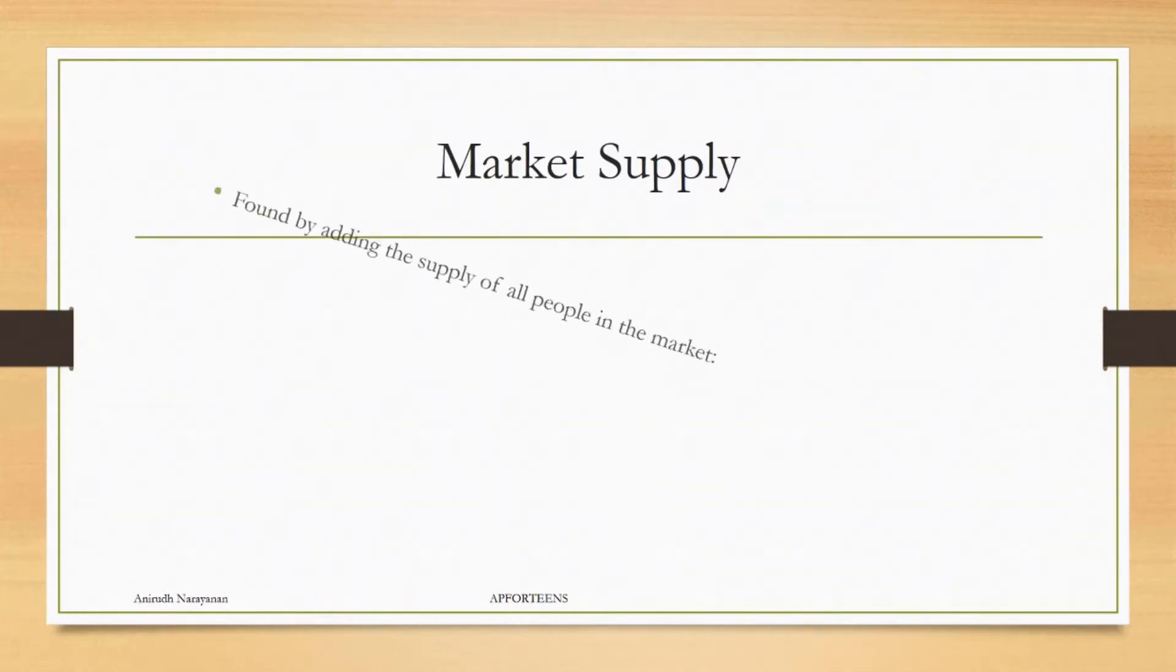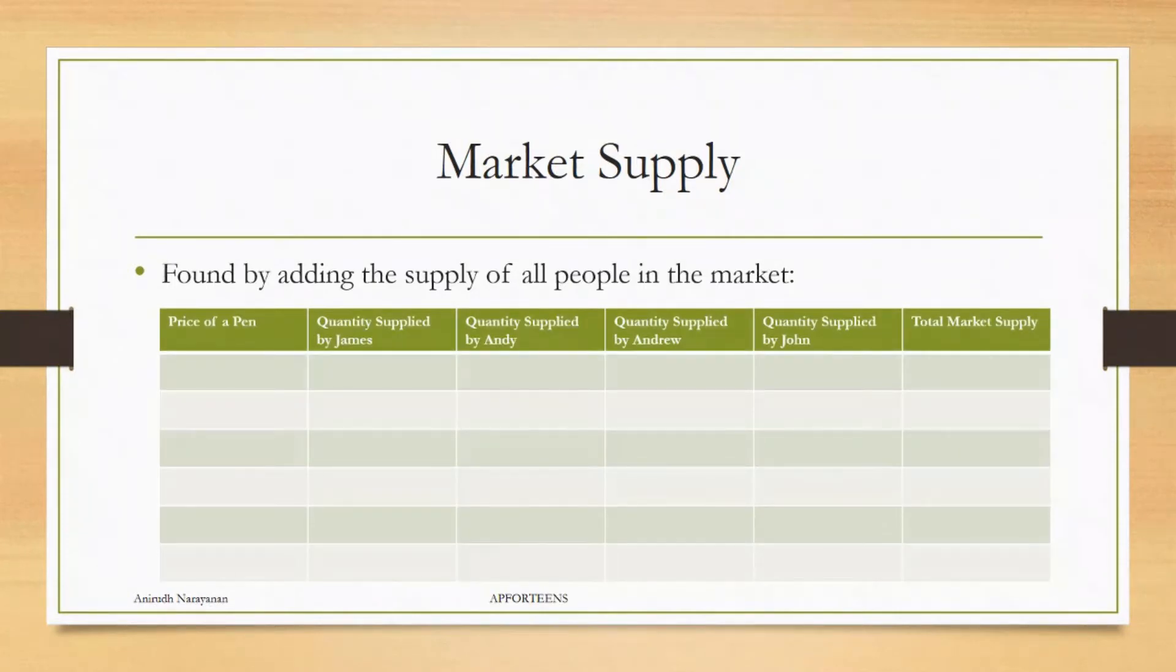Now, the market supply is found by adding the supply of all of the people in the market. So, let's take this, the price of a pen, for the quantity supplied by James, Andy, Andrew, and John.